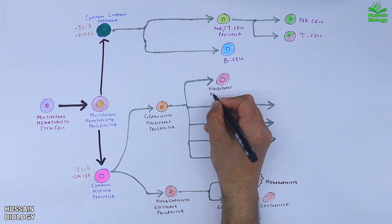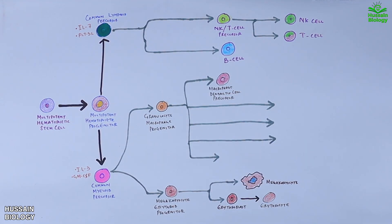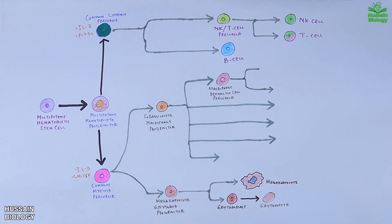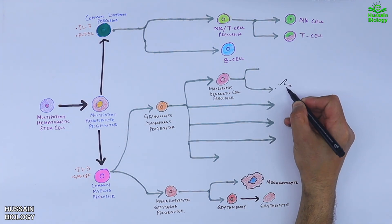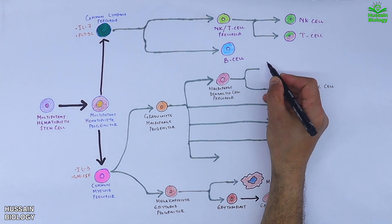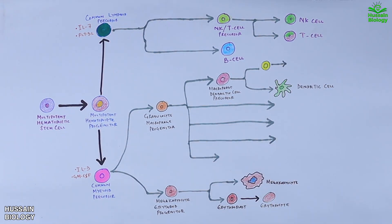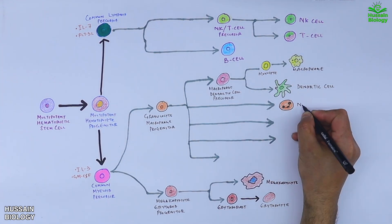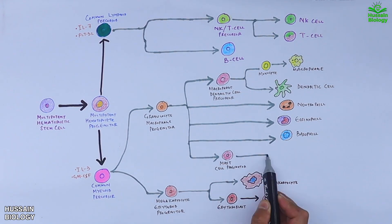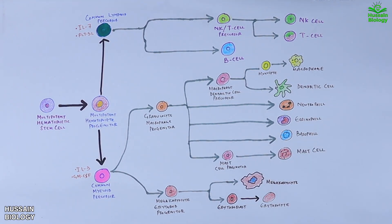Then we get to the granulocyte-macrophage progenitor, which first differentiates into a macrophage-dendritic cell precursor, from which we get dendritic cells and macrophages, as shown in the diagram. It also differentiates into neutrophils, eosinophils, basophils, and mast cells, as shown in the diagram.